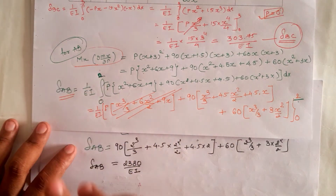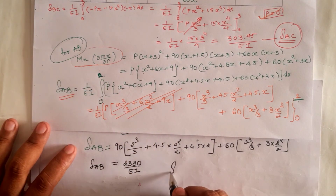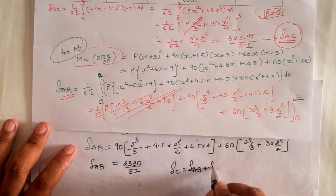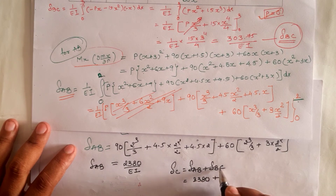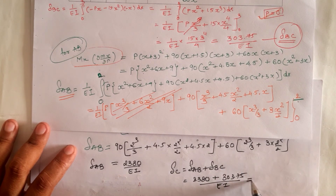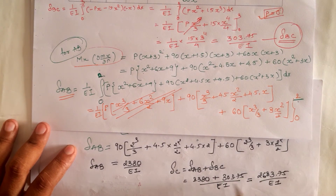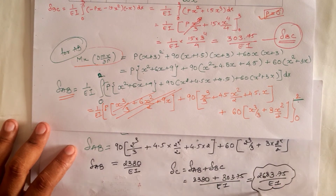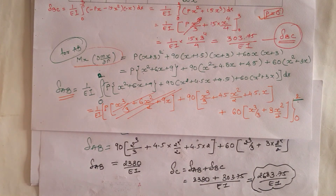We have δ_AB = 2380/EI and δ_BC = 303.75/EI. The total deflection is δ = δ_AB + δ_BC = 2380 + 303.75 = 2683.75/EI. Therefore, the deflection at location C of the given cantilever beam using Castigliano's theorem is 2683.75/EI. Thank you.